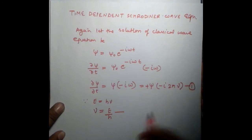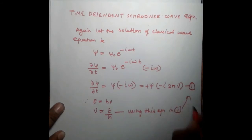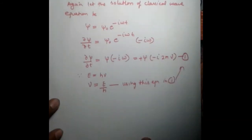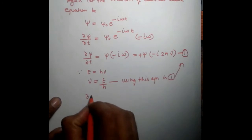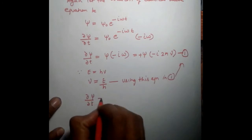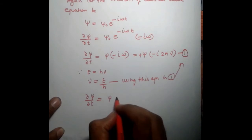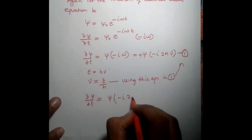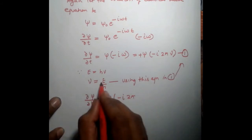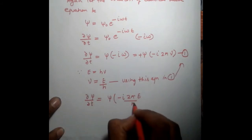Let this equation be first and using this equation in first, we get ∂ψ/∂t equals ψ(-i2πν) equals ψ(-i2πE/h).